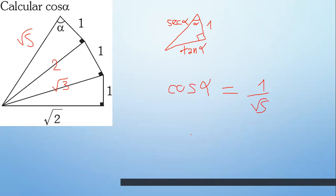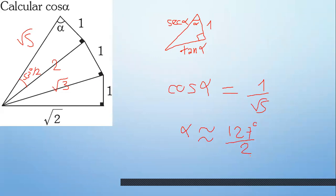¿Y este alfa cómo lo hallo? Es un notable: el notable de 1 a 2. Aquí está el 53 medio. Has estudiado tus notables. ¿Quién sería alfa? El complemento: 90 menos 53 medio. Es aproximado.